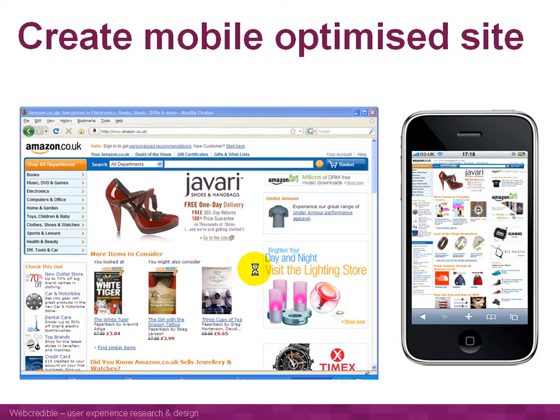On the left is Amazon's home page. If you try to view this website on a lot of mobile phones, they simply wouldn't be able to do it. They just crash because they haven't got the RAM to show such a complex website with lots of large imagery. So a lot of mobile phones wouldn't be able to load this PC website.